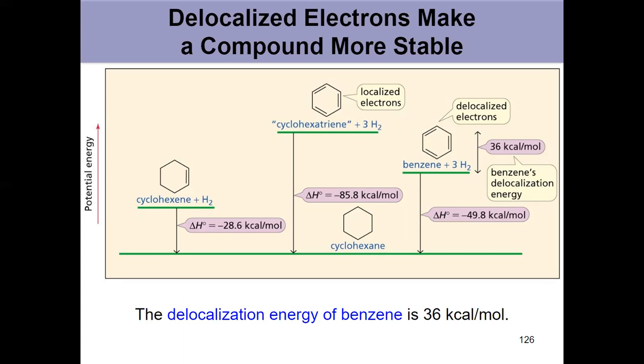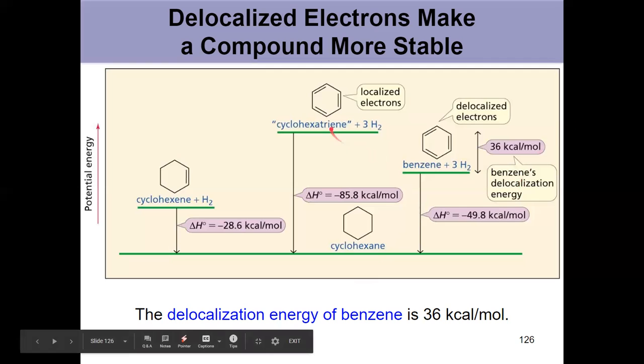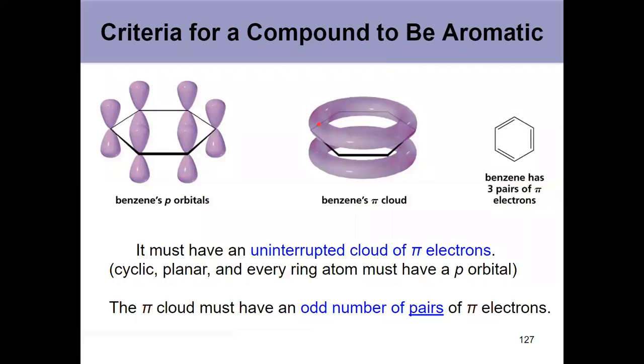In addition, it doesn't undergo any reactions of our alkenes from Chapter 6, except under incredibly harsh conditions. So let's focus on this delocalization energy relative to something like cyclohexatriene. Why is benzene so much more stable?